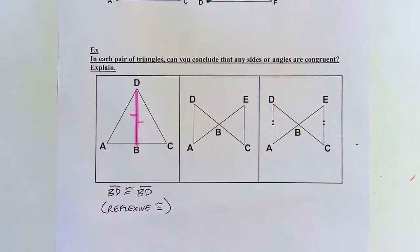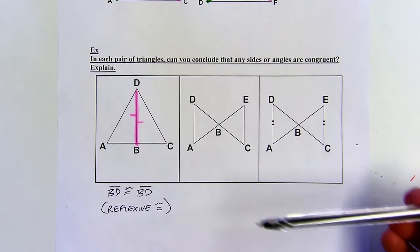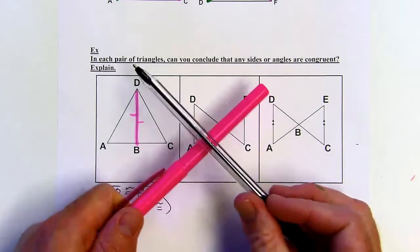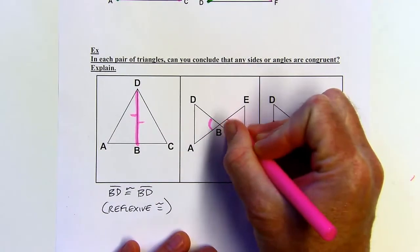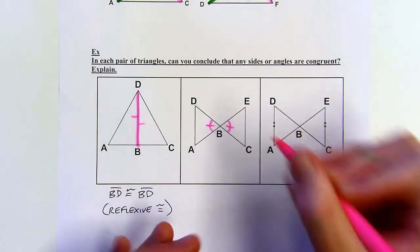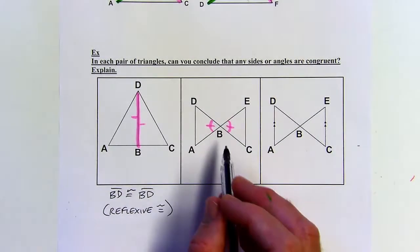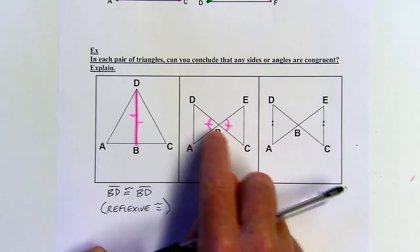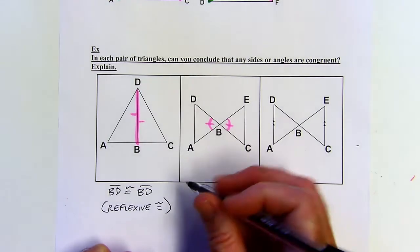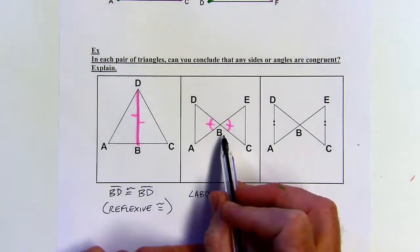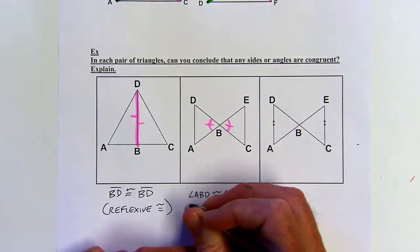I call this the bow tie situation. When you've got two triangles that form what looks like a bow tie or an hourglass, you've got two intersecting lines, and the angles across from each other in intersecting lines are always going to be congruent — those are called vertical angles. That's the vertical angles theorem. I'll use three letters to name them: angle ABD is congruent to angle CBE, putting the vertex in the center.